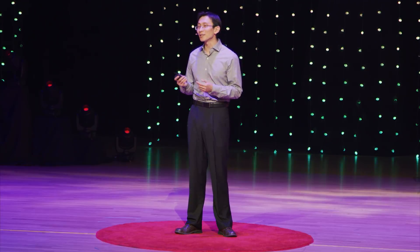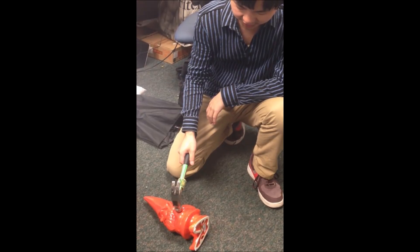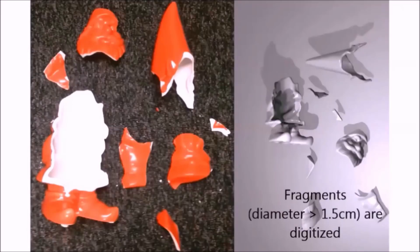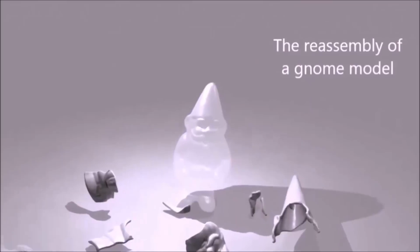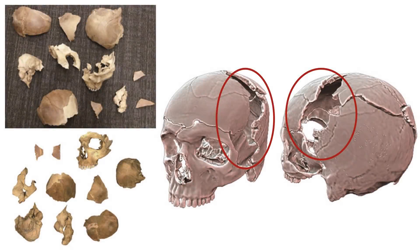After explaining our idea in 2D, let's see how this works with 3D items. Suppose we have a ceramic model and we break it into fragments. Then we digitize these fragmented pieces and our program can automatically reassemble them back to the original model again. On a real skull, this digital reassembly can also be applied — this shows an example of a fragmented skull that got reassembled by our program.